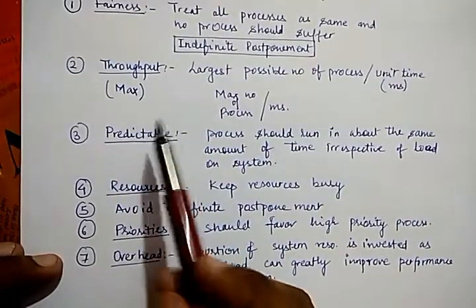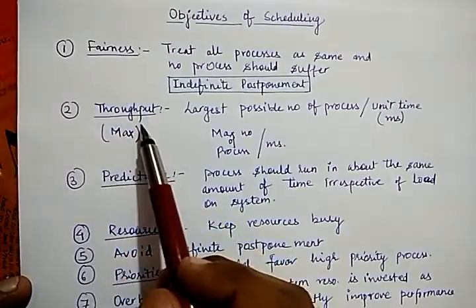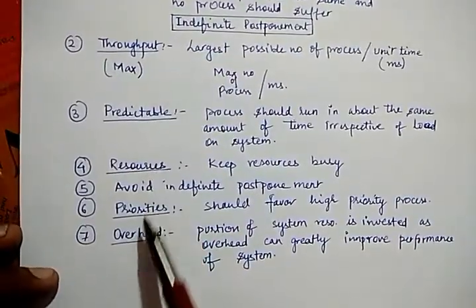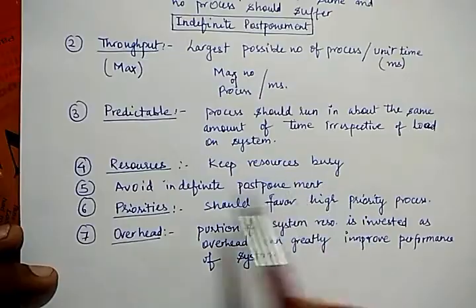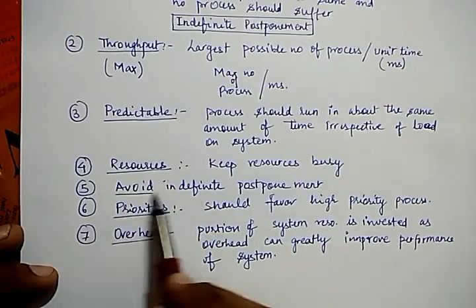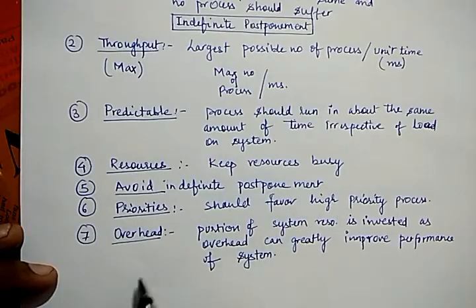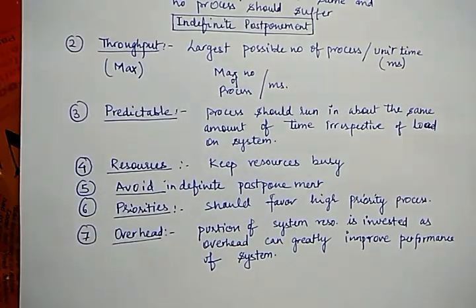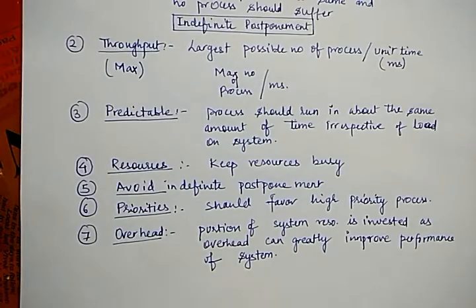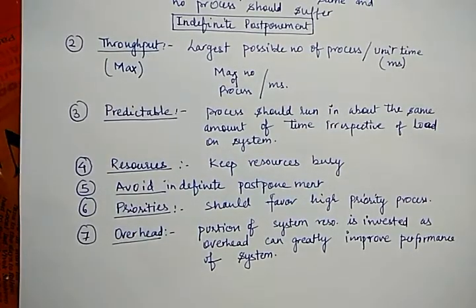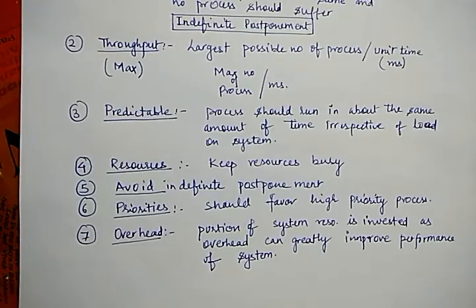That is fairness, throughput, predictable, and keep resources busy as much as possible, avoid indefinite postponement, favor higher priority processes, and overhead. That's it for today's lecture. In the next lecture we'll discuss the scheduling criteria and try to cover the types of scheduling as well. Thank you, and if you have any query you may ask in our comment section.